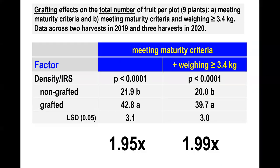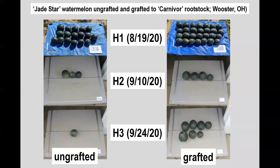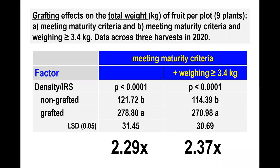Overall, grafting nearly doubled the number of fruit meeting at least one of the maturity criteria and weighing at least 3.4 kg or 8 pounds. The scenario with fruit from non-grafted plants on the left and from grafted plants on the right was relatively routine during our data collection process. The overall effect of grafting on total fruit weight was of similar nature to, but somewhat more dramatic than, its effect on fruit number.